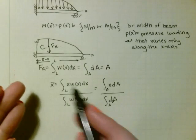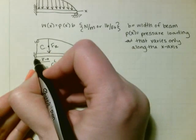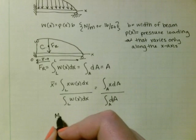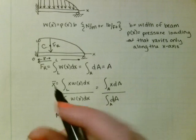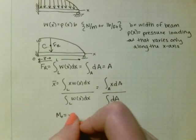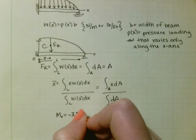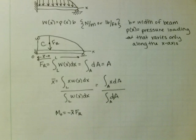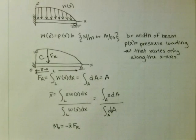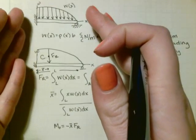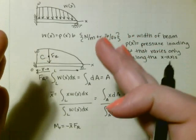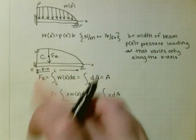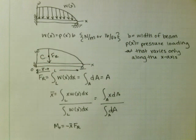What you can then find is the moment about, say, point O, which would be equal to — it's clockwise, so negative — x-bar times F_R. So now we have the tools to represent this entire distributed load as just a force and a location, so that you can also represent it by a moment.